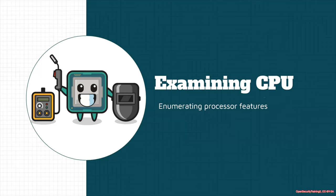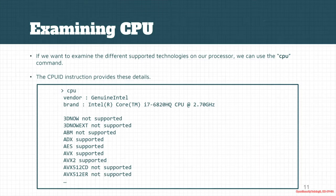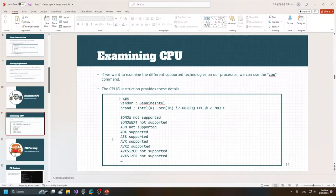Another command for HyperDVG is how it examines the CPU to enumerate processor features. In this command, I executed the CPU command which shows the different capabilities of my processor.